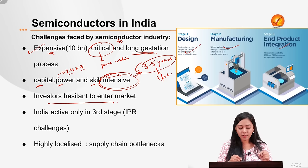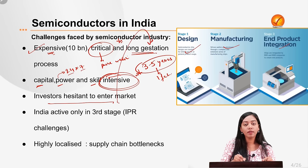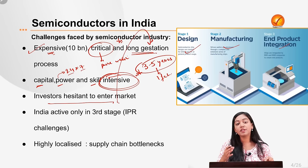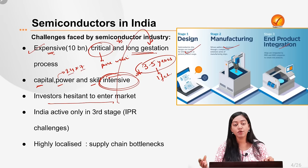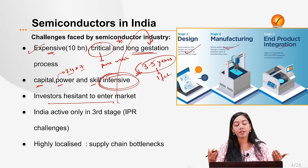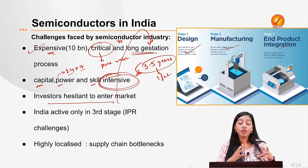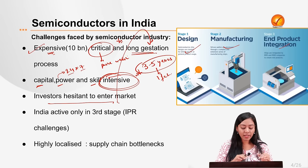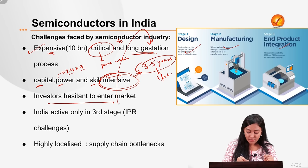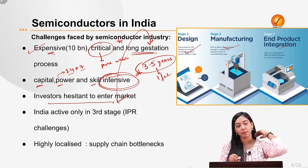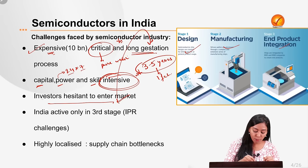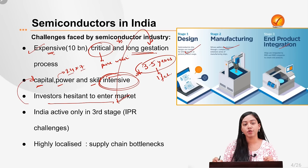Because the industry gives returns only in the longer run and technology becomes outdated very quickly due to rapid Fourth Industrial Revolution growth, investors are hesitant to enter the semiconductor market. This compromises the capital required to sustain the industry. Additionally, India is active only in the third stage of the supply chain, and is underdeveloped in the first two stages.